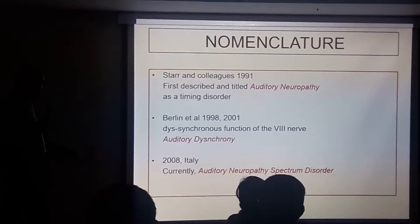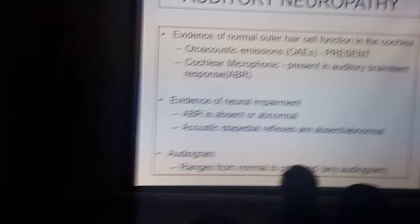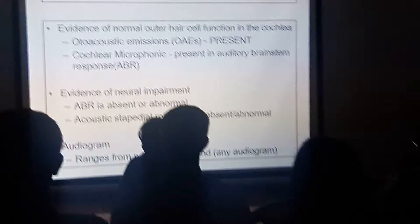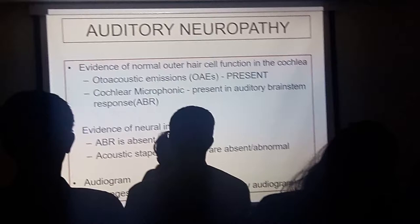So what is auditory neuropathy? Auditory neuropathy is a condition where you have normal outer hair cells. You know the sound path goes from the outer hair cells to the inner hair cells and then into the nerve. So from the inner hair cells onwards, there is some defect such that whatever sound impulses are there are not passing through the nerve. Any defect from the inner hair cells to the auditory cortex is the presence of auditory neuropathy.